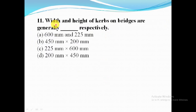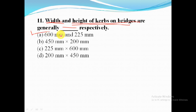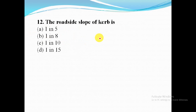The width and height of curbs on bridges are generally 600 mm and 225 mm respectively. The roadside slope of a curb is one in eight.